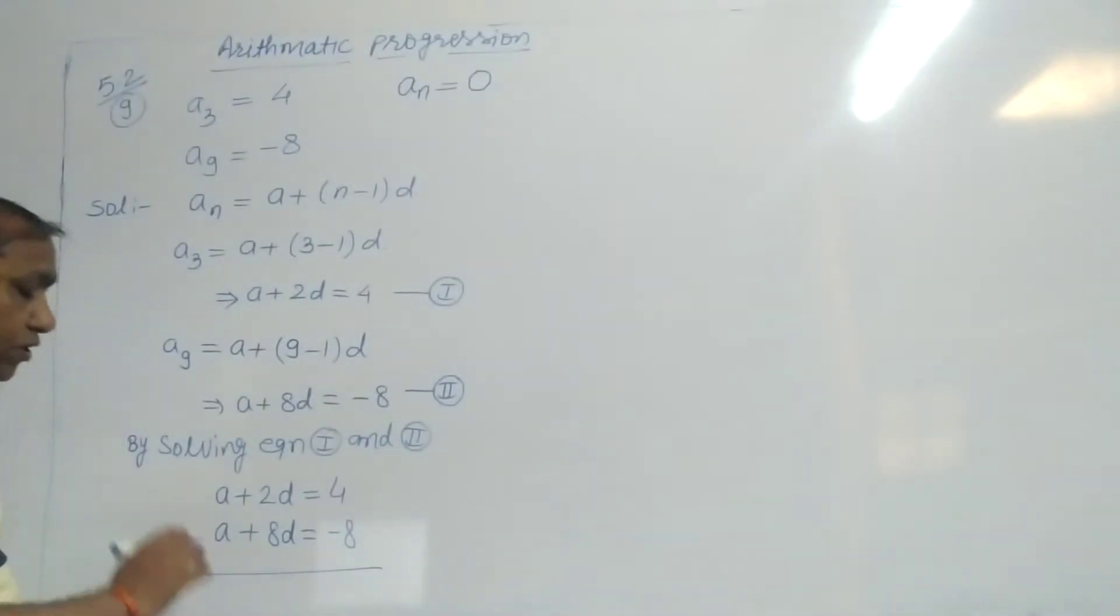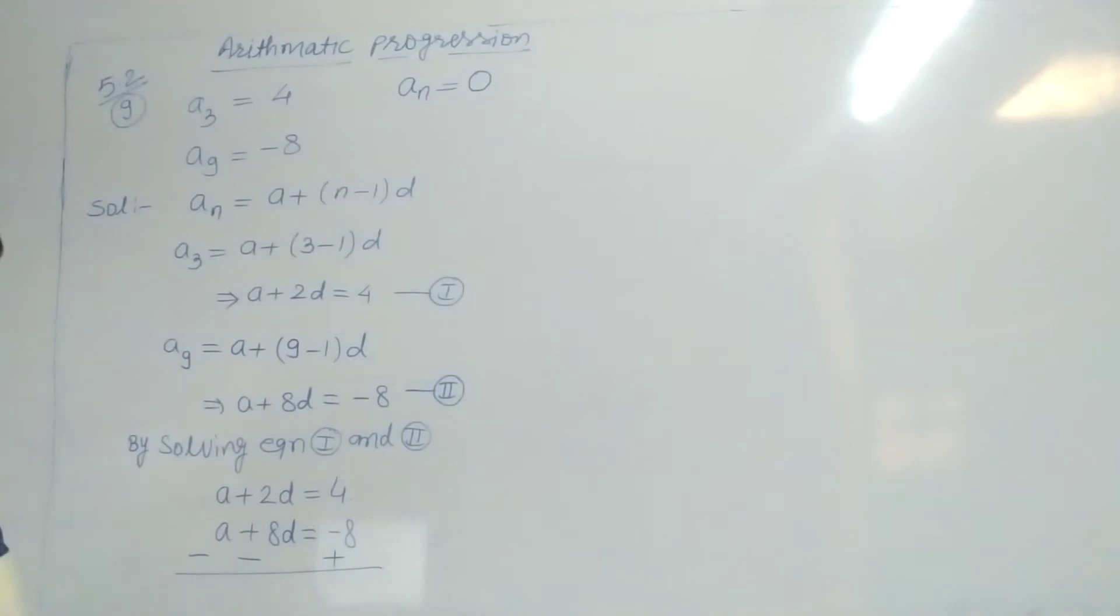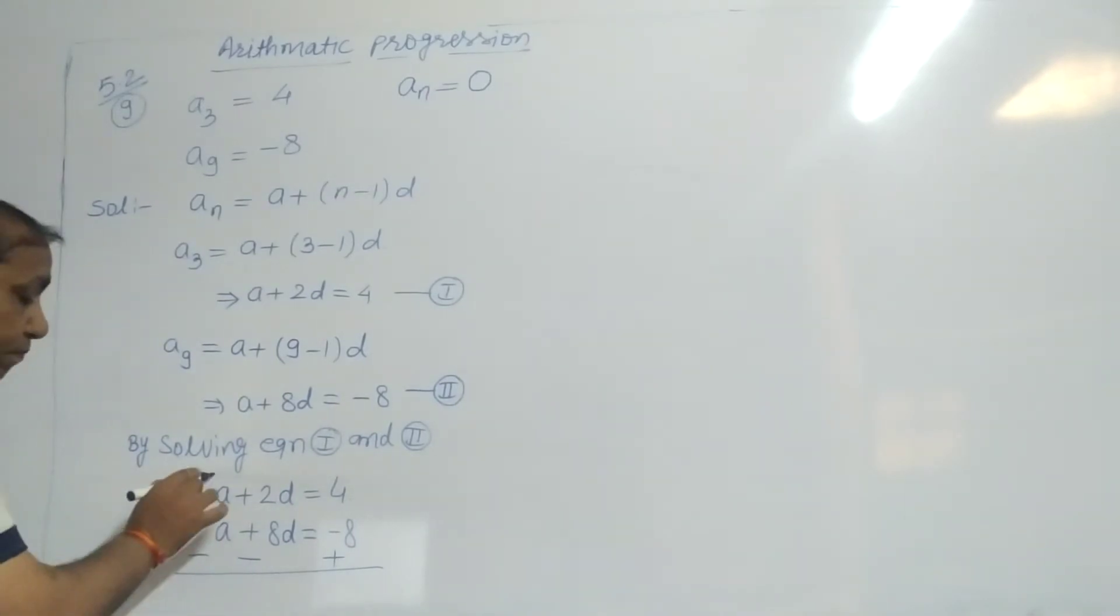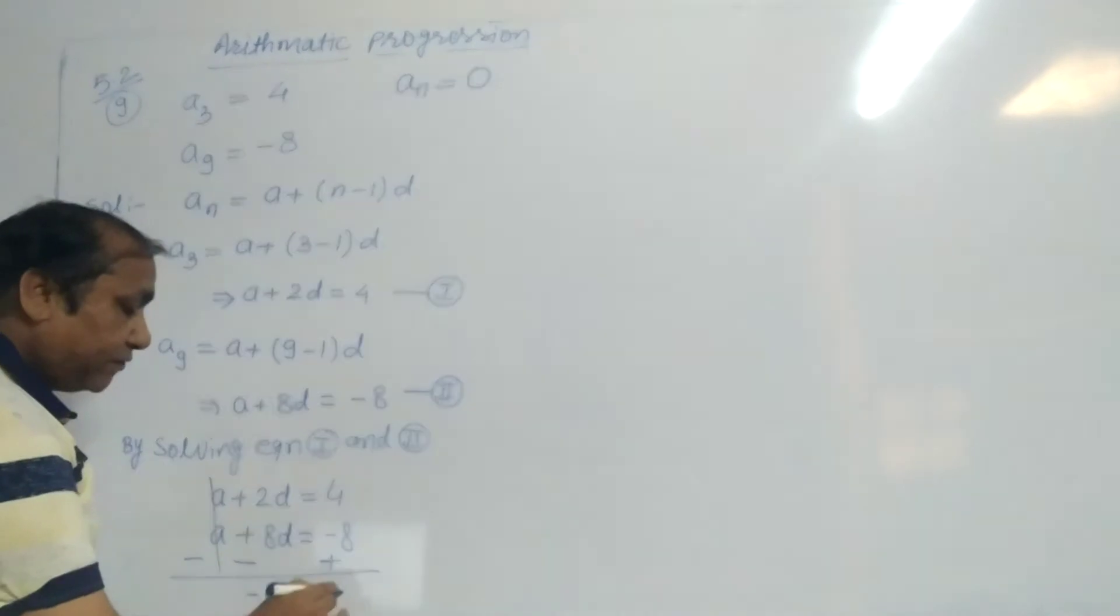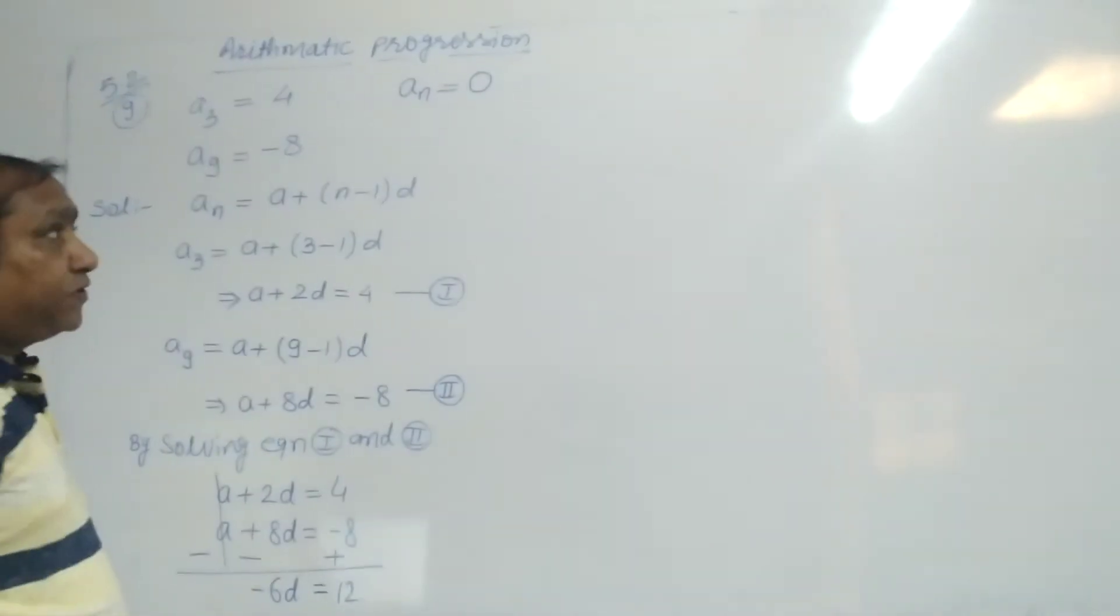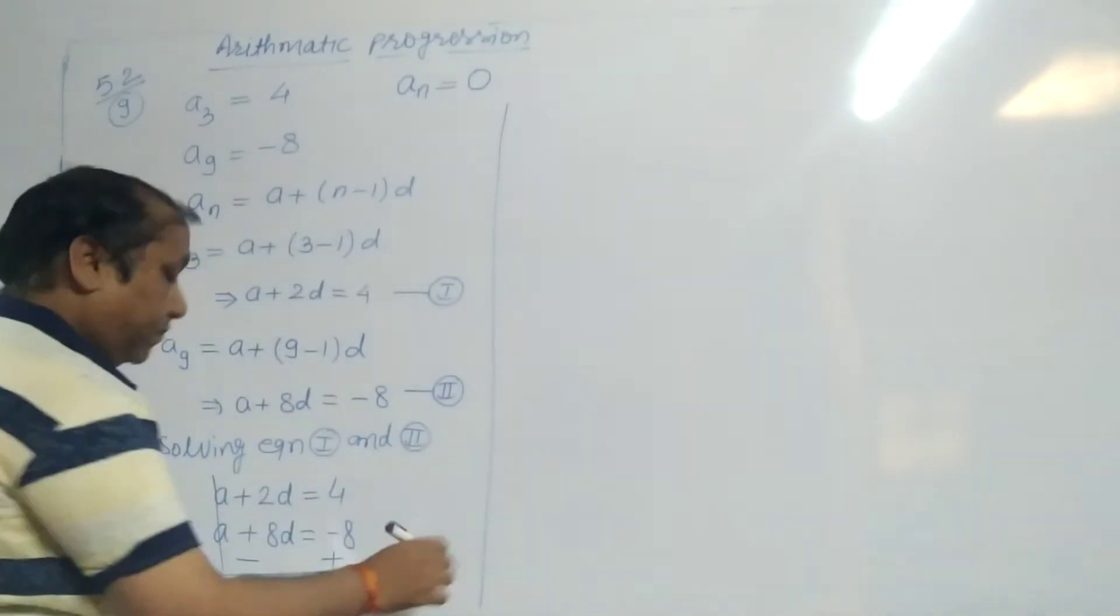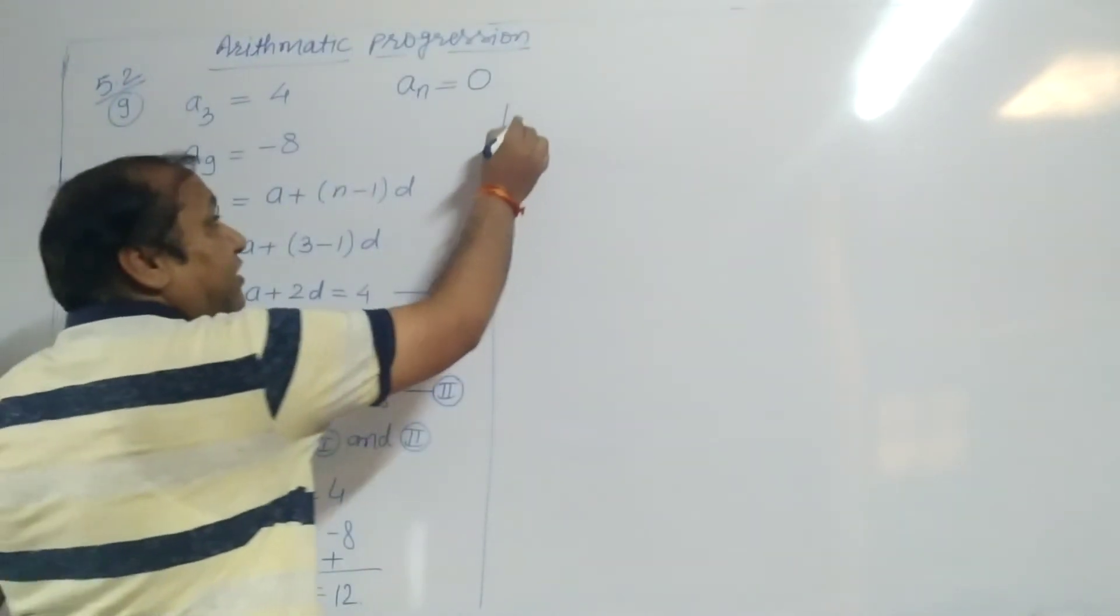Solve these two using simultaneous equation elimination method. Symbol change: plus becomes minus, plus becomes minus, minus becomes plus. A plus 2D, A plus 8D minus. 2D minus 8D is minus 6D equals 4 plus 8. Minus 6D equals 12.